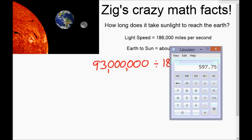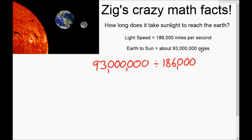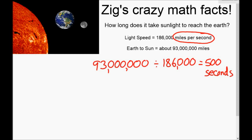Sometimes the Earth is actually further away and sometimes it's a little bit closer, but it's about an average of 93 million miles. So how long does it take for sunlight to reach the Earth at that speed? If we take our 93 million and divide it by the 186,000 miles per second, we'll find out how many seconds it takes for that sunlight to get to Earth. Let's grab the calculator — 93 million divided by 186,000 — it goes nice and evenly: 500. That's 500 seconds.